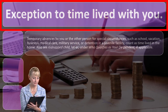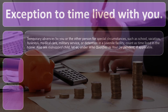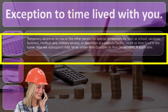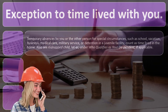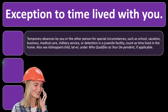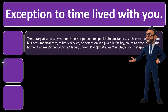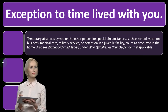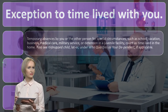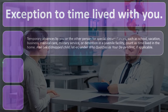Exception to time lived with you: temporary absences by you or the other person for special circumstances — such as school, vacation, business, medical care, military service, or detention in a juvenile facility — count as time lived in the home. Also see 'kidnapped child' later under who qualifies as your dependent, if applicable. These are the exceptions when calculating whether someone has lived in the home for the required period.